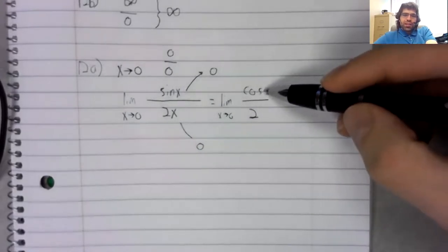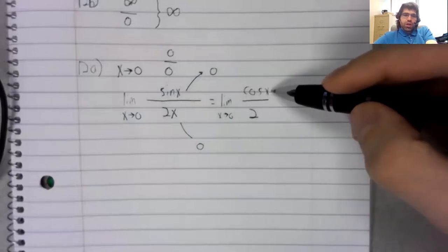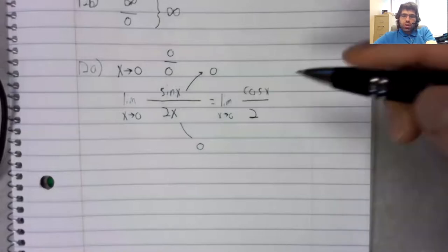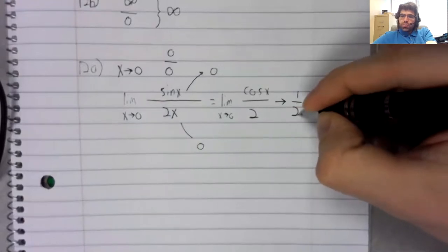The cosine is continuous. So as x goes to zero, this is just going to the cosine of zero, which is one.